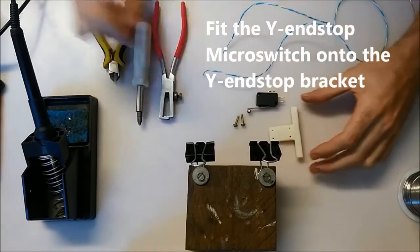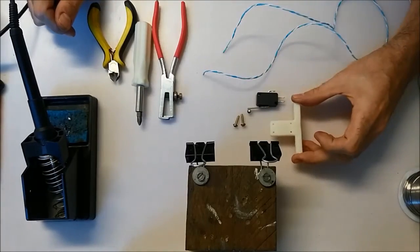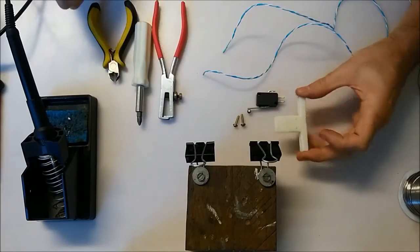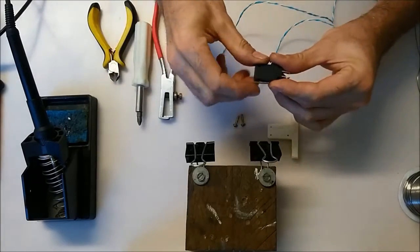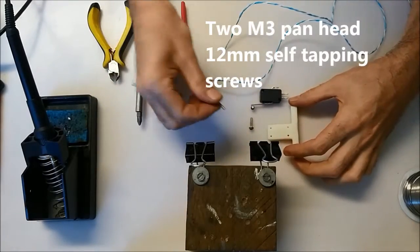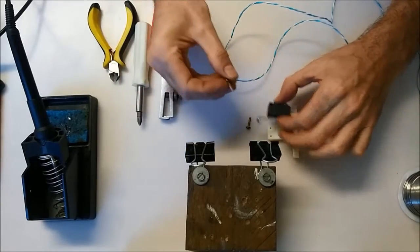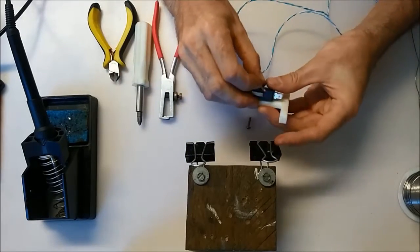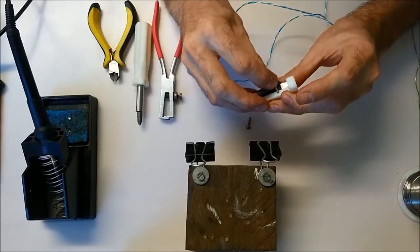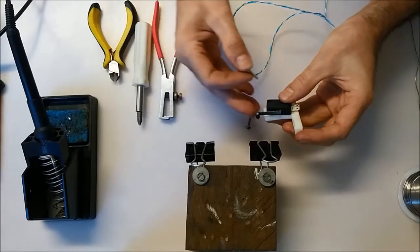And we're going to now fit the end stop onto the Y-end stop bracket. So we've got our little micro-switch, a couple of screws, M3 by about 12mm long. So it needs to go through the micro-switch, and then obviously tap into the plastic. So we'll mount that first.